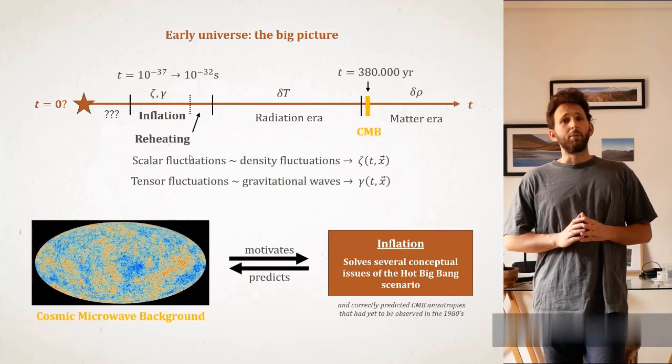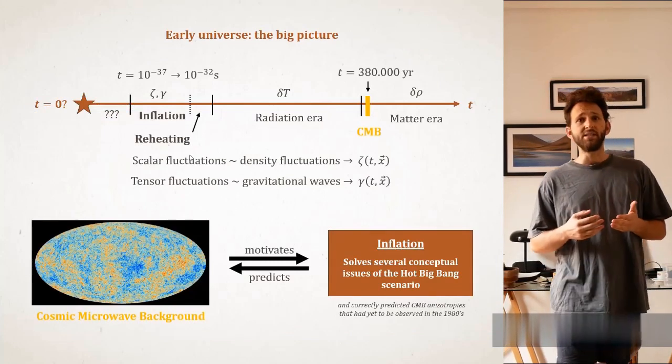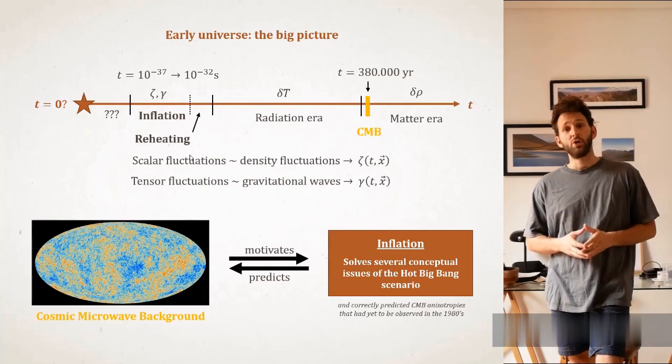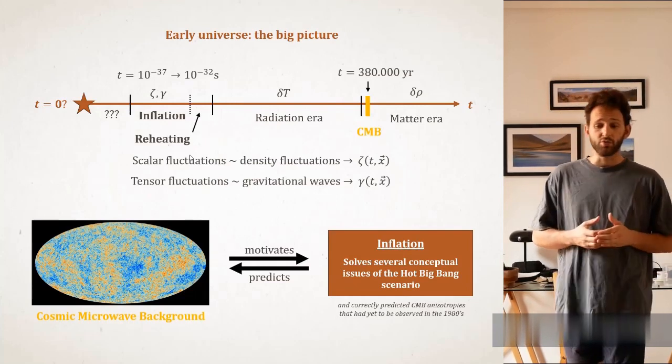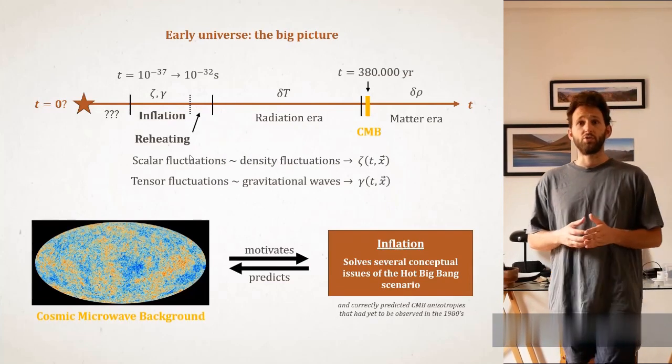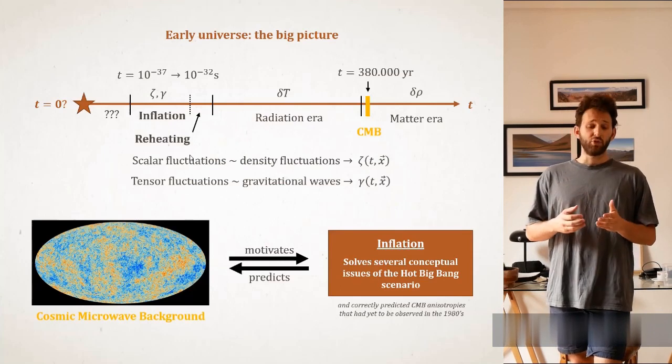Let's start by setting the big picture. The inflationary period, which is followed by reheating, is of crucial importance, as it sees the birth of primordial fluctuations, both scalar fluctuations, which are nothing but the density fluctuations, and fluctuations of the tensor type, which are the gravitational waves.